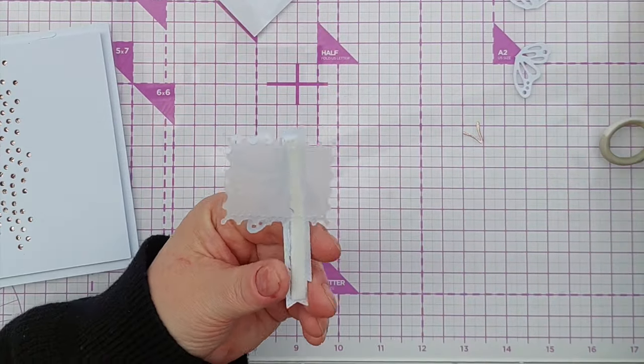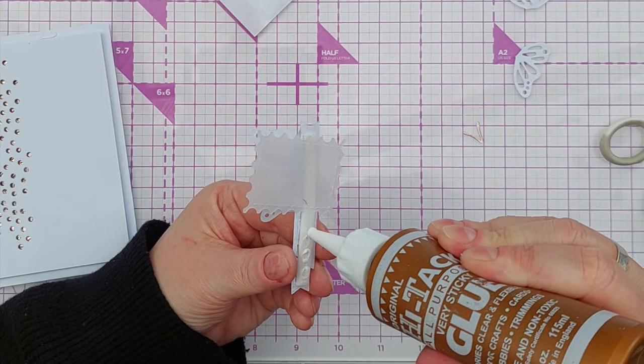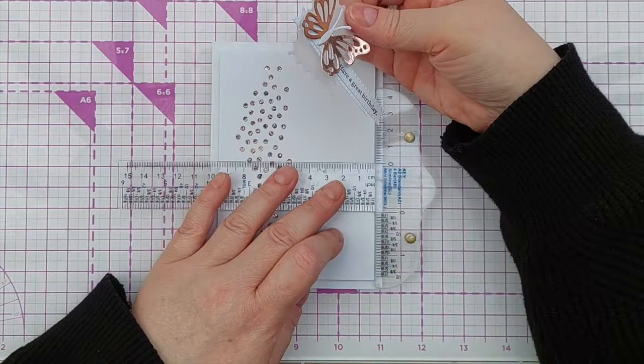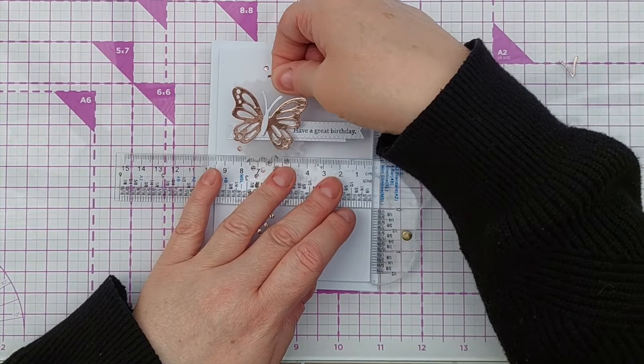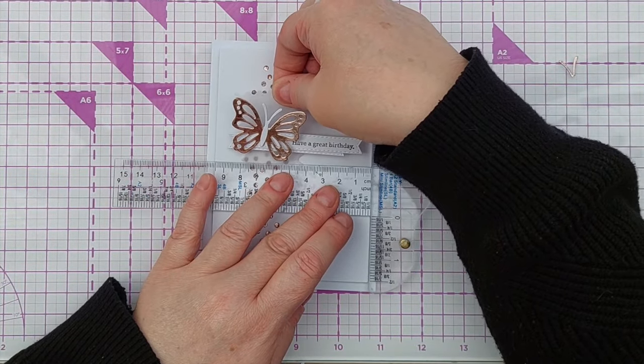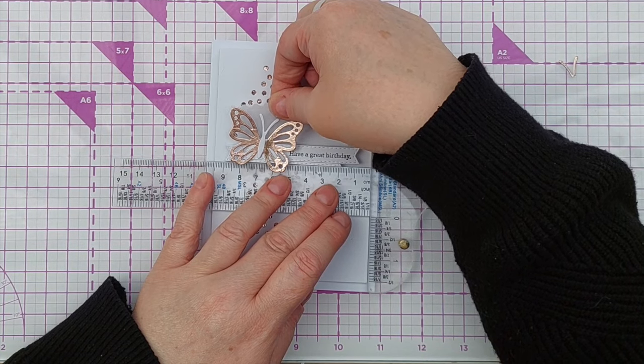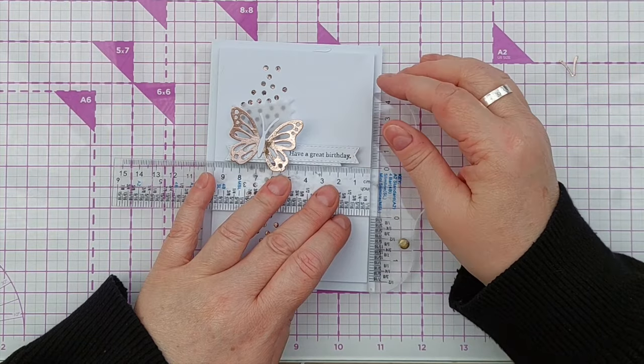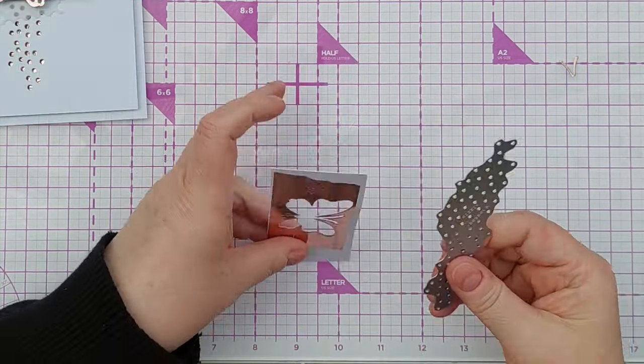I might pop a little bit of glue on here as well just to give me a little bit of wiggle room when I attach it. Now I'm going to use my t-square ruler to get this lined up nice and straight I want the sentiment to be straight really.